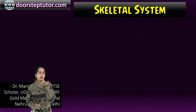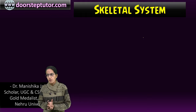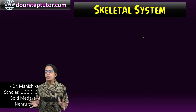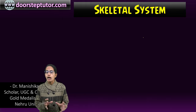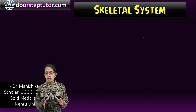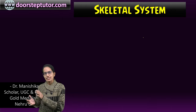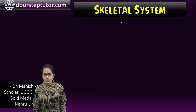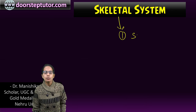Let's talk about a very important topic: the skeletal system. The skeletal system supports the body. It is made up of bones and cartilage. Bone is the hard and bony structure, however cartilage is the soft and elastic structure.